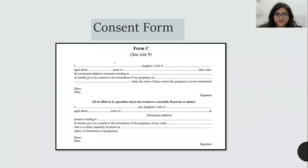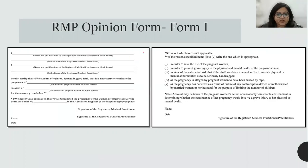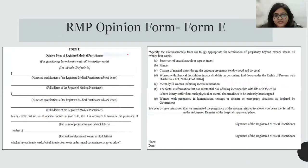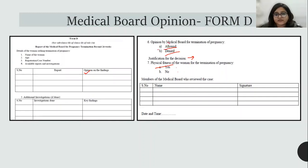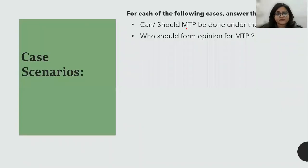Form C and Form I were there previously; the new additions are Form E and Form D since the 20–24 weeks and beyond 24 weeks categories are new. In Form D, the Medical Board records their findings, writes 'allowed' or 'denied' with justification, assesses the woman's physical fitness for MTP, and signs. Form D is very important — it must state whether the woman is fit enough for MTP and whether the board allows or denies it.